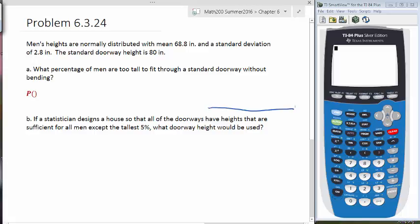If we draw a bell curve to help us with this problem, this is 68.8. What we want to do is figure out what percentage of men are basically 80 inches or taller. So 68.8 is here, 80 inches would be somewhere to the right of that, and so we would be looking at the area here.